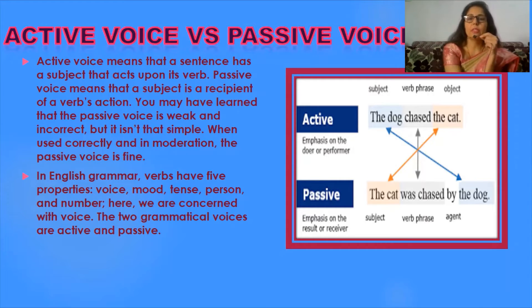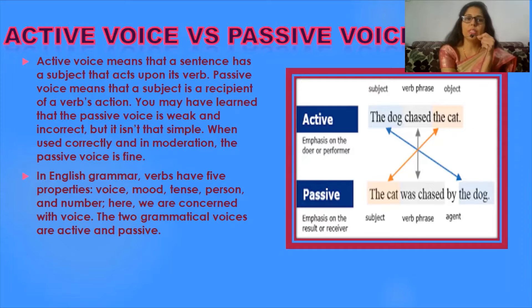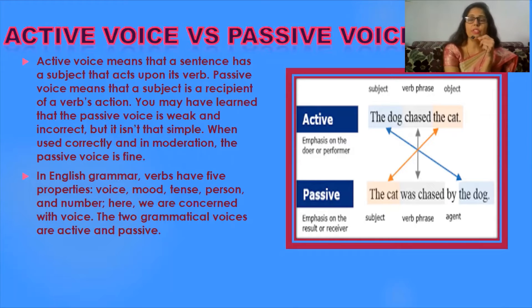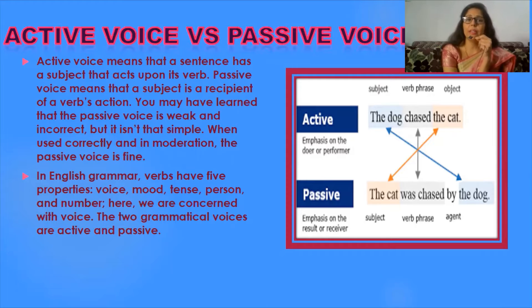There are certain benefits of framing sentences in active and passive voice. On occasions when we do not want to express who has done the work or do not wish to clarify who accomplished the action, the subject can remain passive and we frame a passive voice sentence. But when we would like to say that a specific person did the work, or we want to specify the doer of the action, we frame active voice.